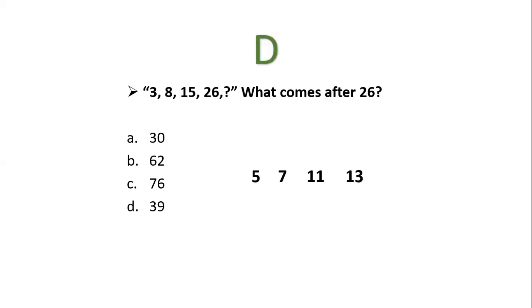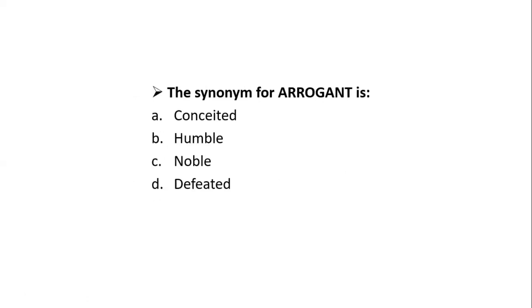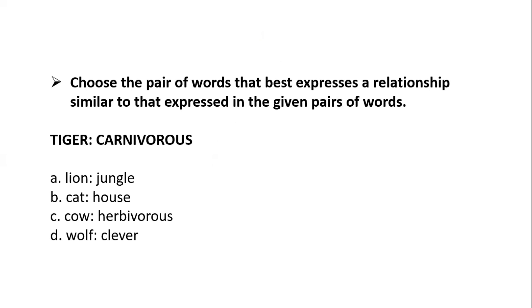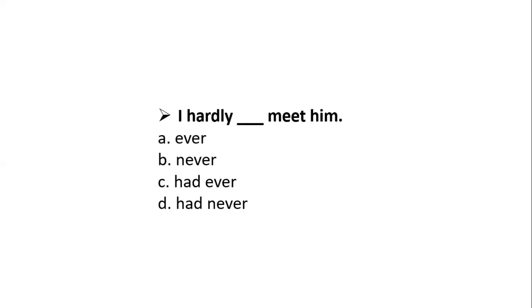The next portion is English-based MCQs. The synonym for arrogant is: conceited, humble, noble, or defeated. Arrogant means proud or haughty, so the most suitable option is conceited. The synonym for zest is enthusiasm — zest means enthusiasm and passion. For the analogy question: Tiger is to carnivorous as what? Tiger is a flesh-eating animal, so similarly cow is herbivorous — a grass-eating animal. The correct option is C. For the fill-in-the-blank: 'I hardly ___ meet him.' Hardly is a negative word, so another negative word like never cannot be used with it. The correct answer is 'I hardly ever meet him.' Correct option is A.